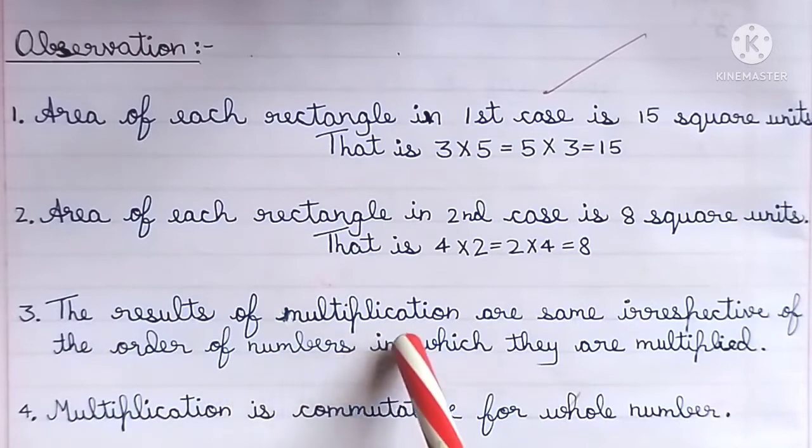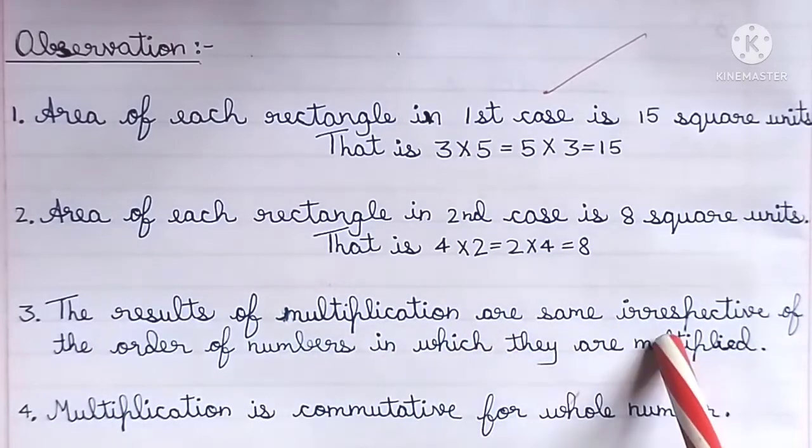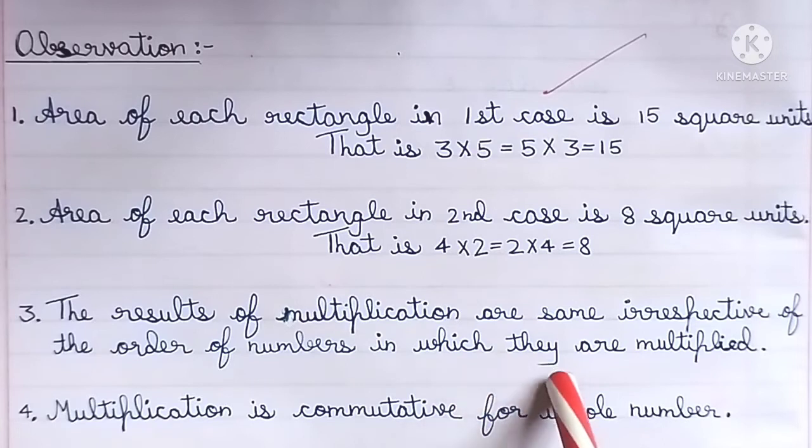The results of multiplication are the same irrespective of the order of numbers in which they are multiplied. Multiplication is commutative for whole numbers.